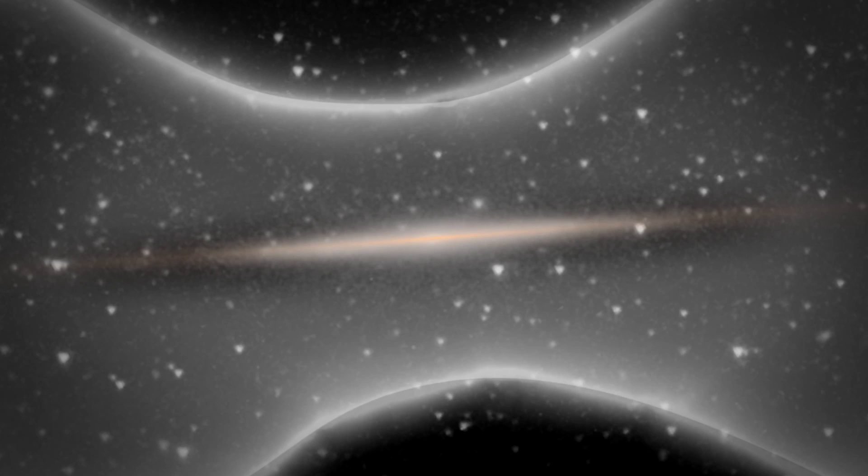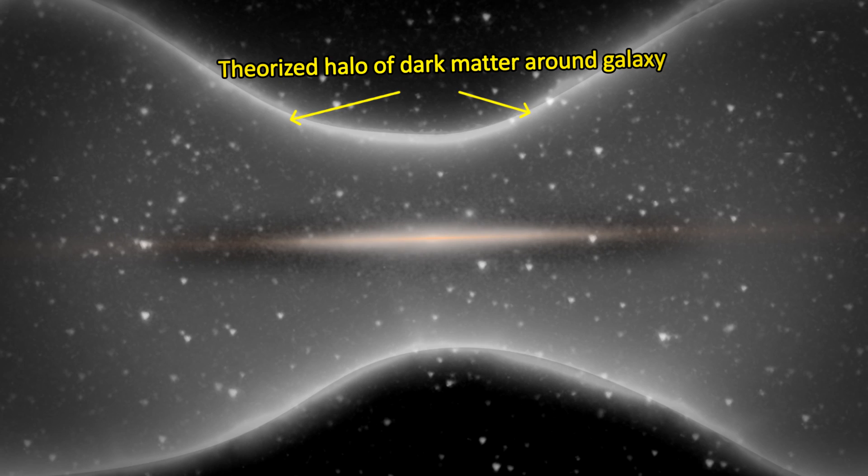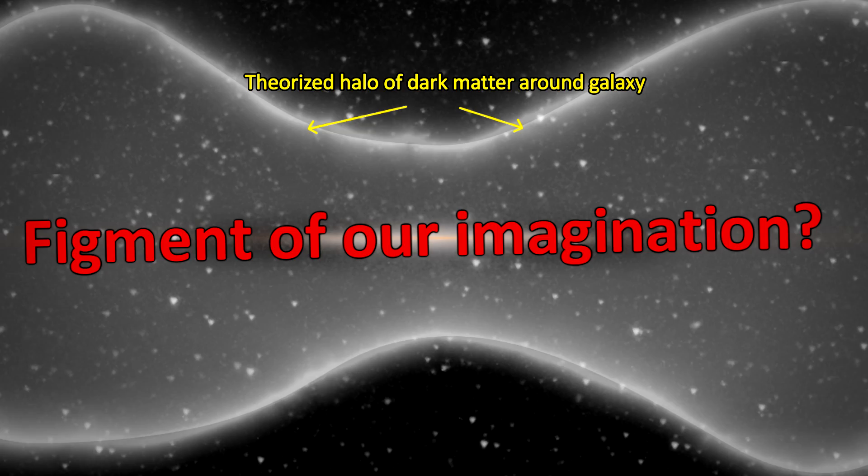By the same token, is it possible that what we have invented as dark matter to explain the motion of stars and galaxies and clusters is like Le Verrier's planet Vulcan, a figment of our imagination? Could it be that Einstein's general relativity has a flaw? This is a serious school of thought among some scientists that has surprising evidence to support it. The details are coming up right now.